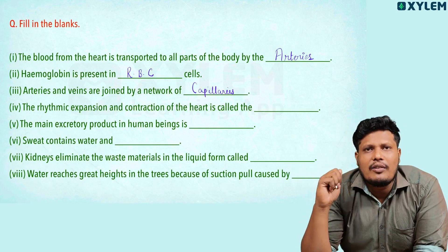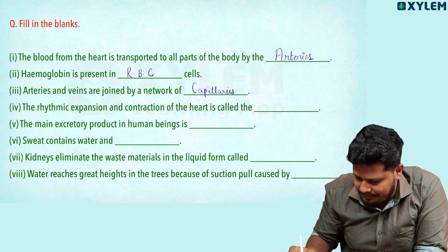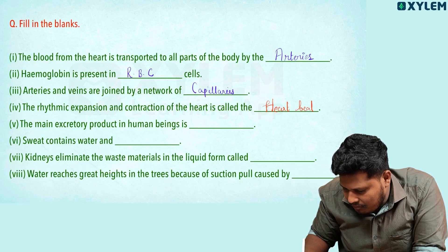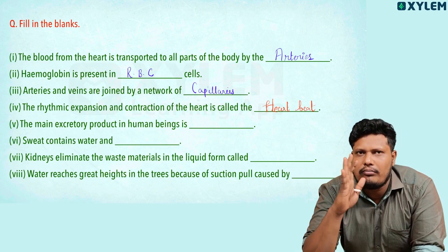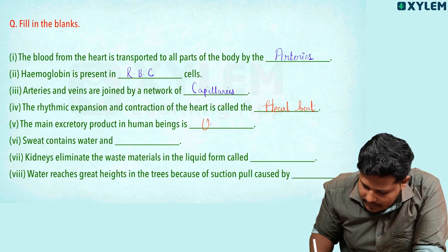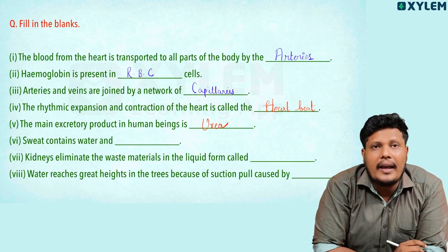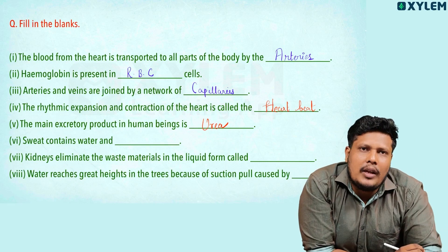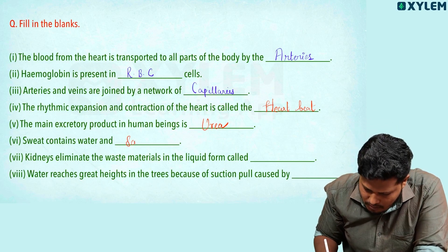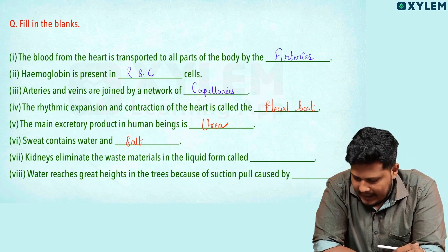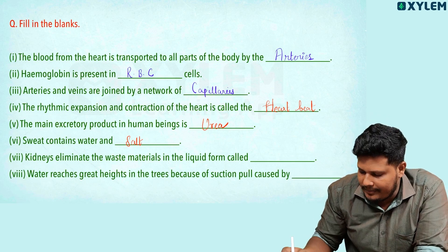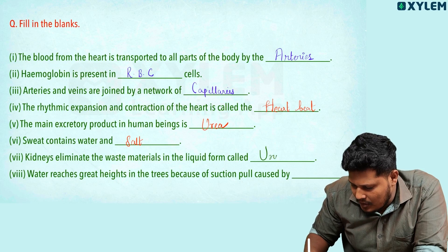Rhythmic expansion and contraction of the heart is called heartbeat. The main excretory product in human beings is urea. Sweat contains water and salt. Kidneys eliminate waste material in liquid form, and that is urine. So the main excretory product is urine.